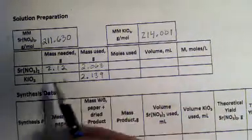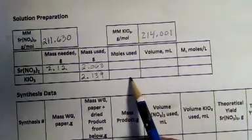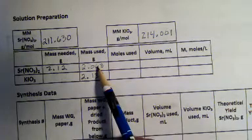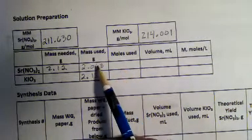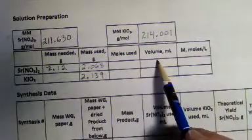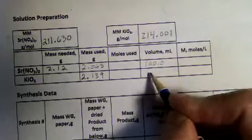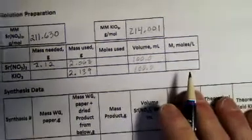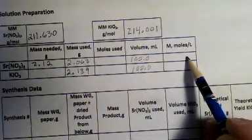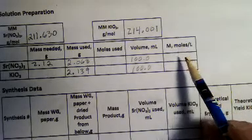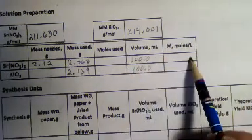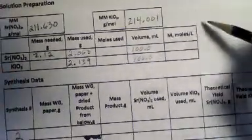Now that we have the number of grams of each component we massed out, how do we go to moles? You use the molar mass — that's grams per mole. So take the grams and divide by the molar mass to get moles used. The volume was 100 milliliters using a volumetric flask. Once you know moles and volume, you can calculate molarity. Molarity is moles per liter, so convert milliliters to liters: moles divided by liters gives moles per liter. That's the top part — getting a standardized solution.